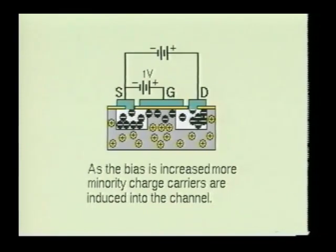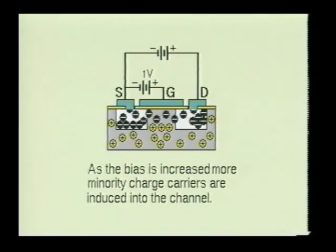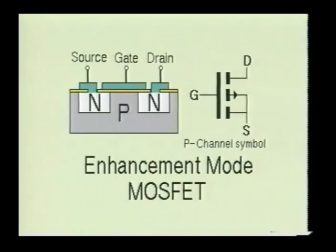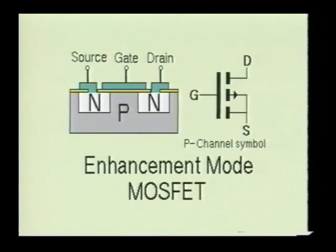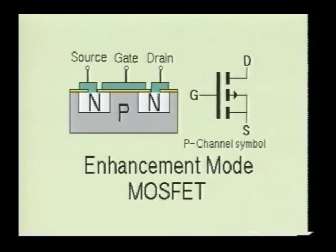The higher the bias voltage applied to the gate, the wider this channel of minority charge carriers will become. Since the conductivity of the channel is enhanced by the positive bias applied to the gate, this type of semiconductor is known as an enhancement mode MOSFET. Because the gate is insulated from the channel, there will be virtually no current flow between the substrate channel and the gate, giving the insulated gate MOSFET a very high input impedance.